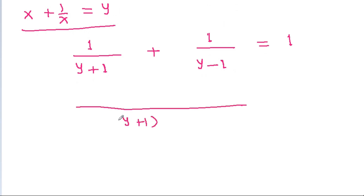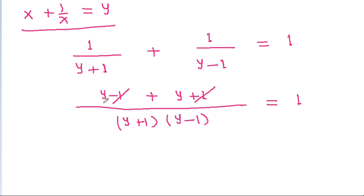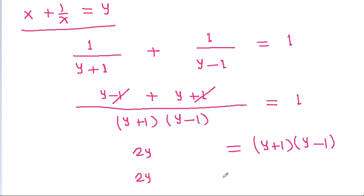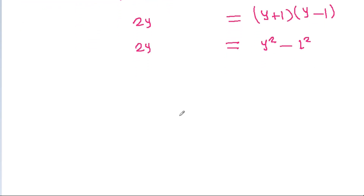Multiplying out, (y + 1)(y - 1) is the common denominator, giving us (y - 1) + (y + 1) = (y + 1)(y - 1). So 2y = y² - 1, which gives us y² - 2y - 1 = 0.